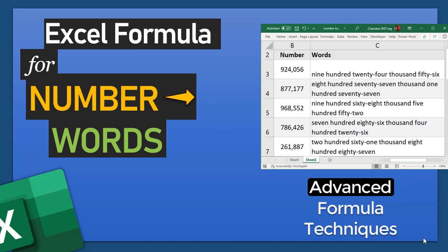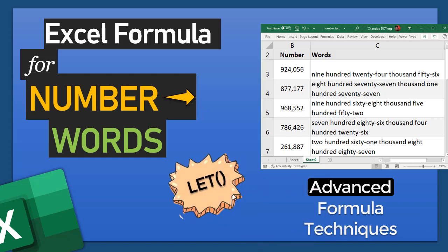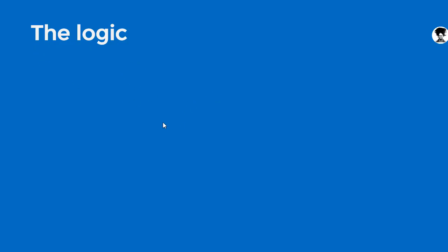If you are curious about some advanced formula writing techniques, then please watch this video. I'm going to demonstrate how you can use one of the newly introduced Excel functions called LET. What the LET function does is it lets you define variables that you can use within the context of a formula you are writing. This is useful to shrink very long formulas into shorter ones. Note that LET is only available in Office 365, and as of March 2020, it's not available in all versions yet, but it will be very soon.